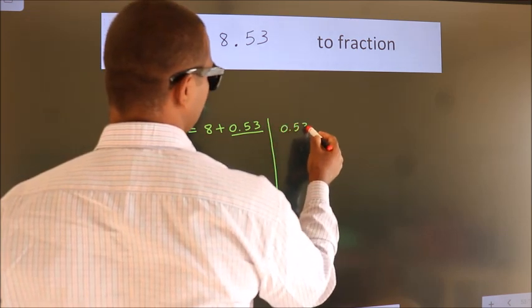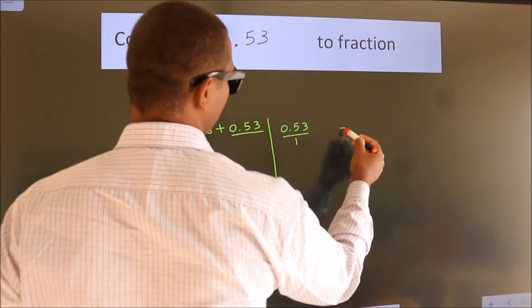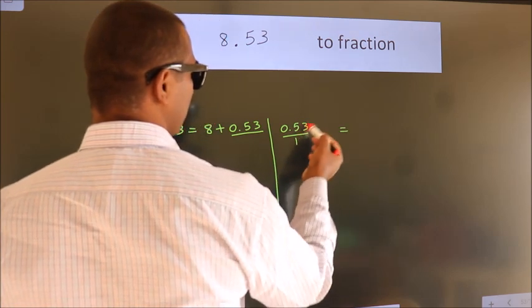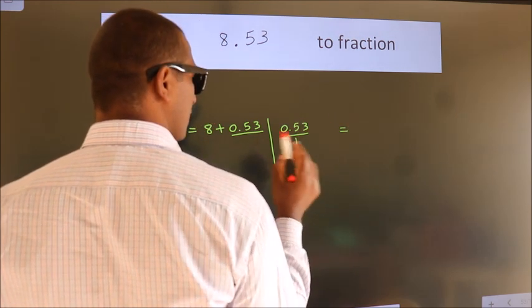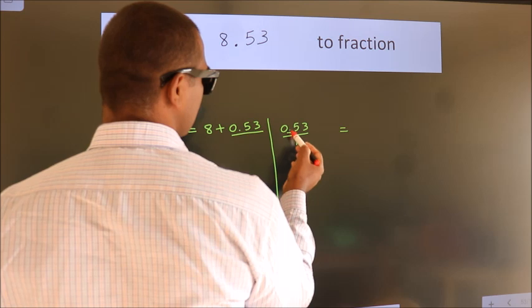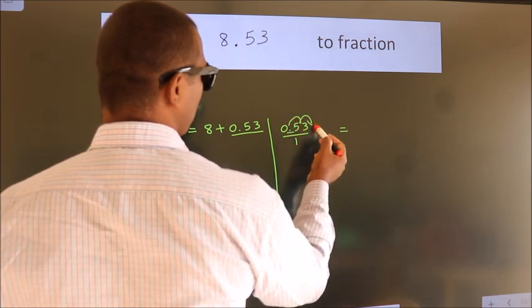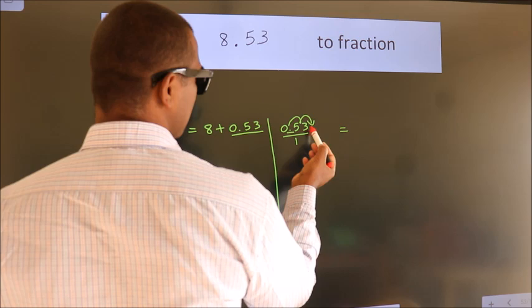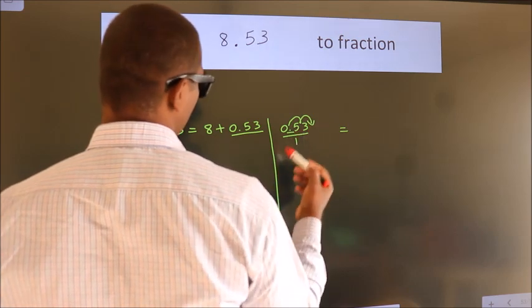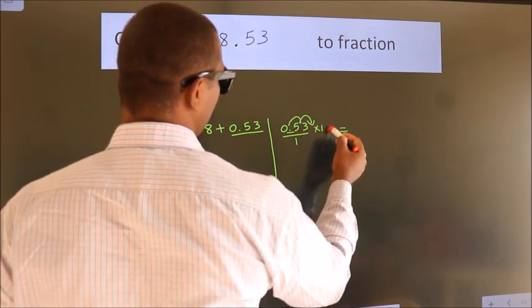So 0.53. To convert this to fraction, for that we have to move this decimal after 1, 2 numbers. To move this decimal after 2 numbers, for that multiply it with 100.